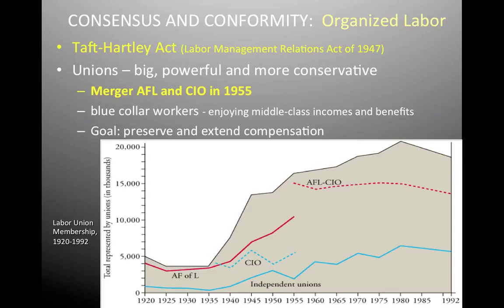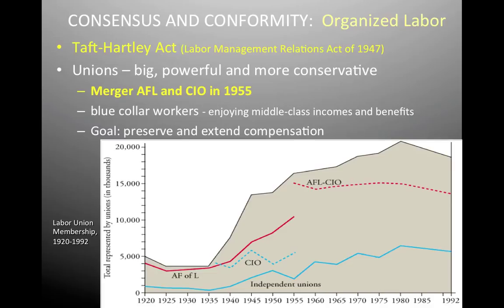The next thing we need to really talk about is consensus and conformity, and organized labor. After World War II, labor unions actually increase not only in power, but they also start to strike more often because they don't have to worry about striking and hurting the war effort. It was after VJ Day — the victory over Japan — that strikes were tending to run longer. These two senators, Taft and Hartley — get their names down, circle it — are going to sponsor a bill known as the Taft-Hartley Act, also technically known as the Labor Management Relations Act of 1947.